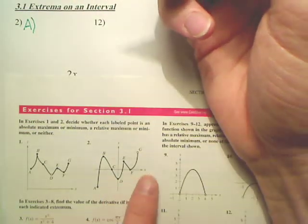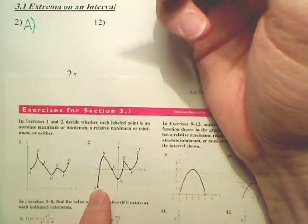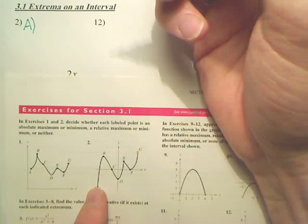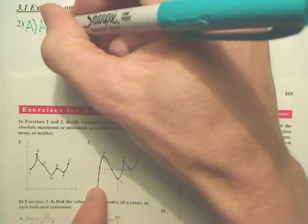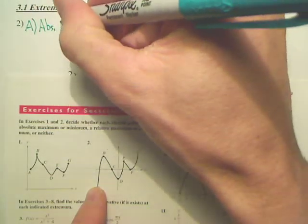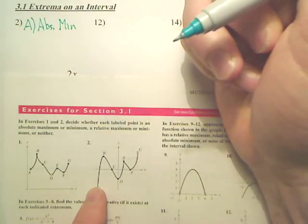A, if you look at this graph, does it look like the absolute lowest point possible? That is the absolute minimum.